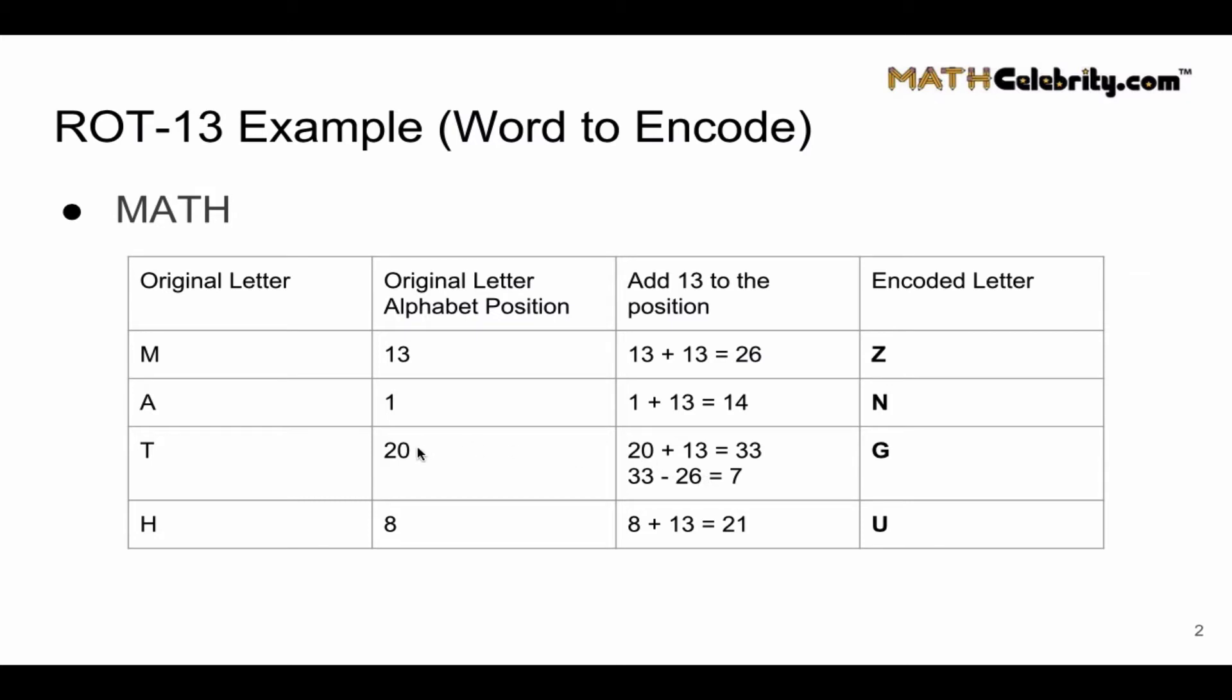So T was position 20, we added 13, we get 33. It's greater than 26, so what we do is we subtract 26 from that new position. We get 7, and G is the 7th letter in the alphabet.